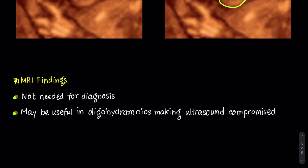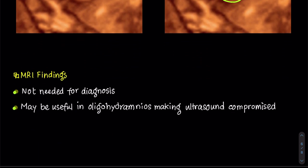MR imaging is not needed to diagnose anencephaly. It may be useful if ultrasound is compromised or equivocal, especially in oligohydramnios. You will find little or no supratentorial remaining brain on MR, and the brainstem and cerebellum will often be dysplastic. It may help evaluate other associated anomalies, but as anencephaly itself is a lethal malformation, MR imaging is not routinely recommended.